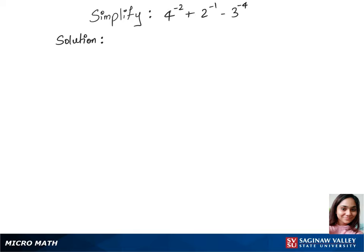To simplify this question, we will use the negative rule of exponents. So let's write our first step using the formula, which is 1 over 4 square, plus 1 over 2, minus 1 over 3 power 4.